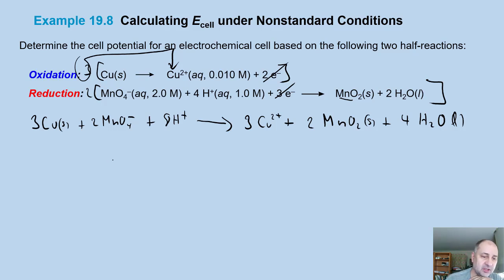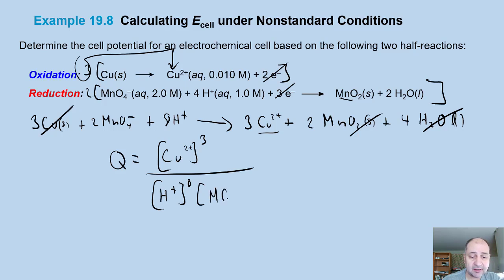On the product side, we now have 3 copper ions, and I'm going to leave the electrons out because they're going to cancel. We also have 2 MnO₂, that's a solid, and we have 2 times 2 is 4 water molecules. For the equilibrium expression, or Q in this case, it's products over reactants. We're going to have copper to the third power divided by, and so here again we have solid, solid, liquid.